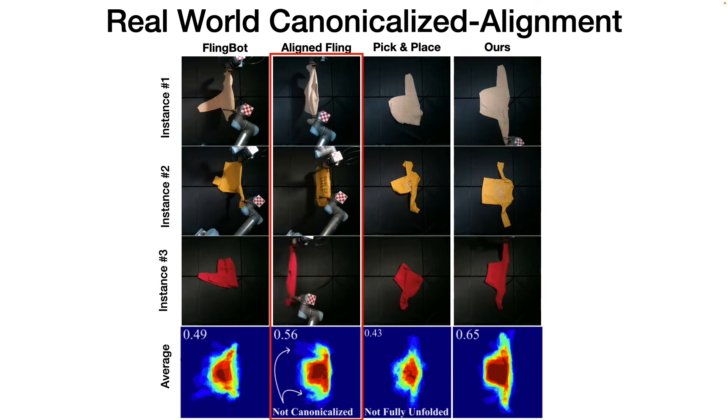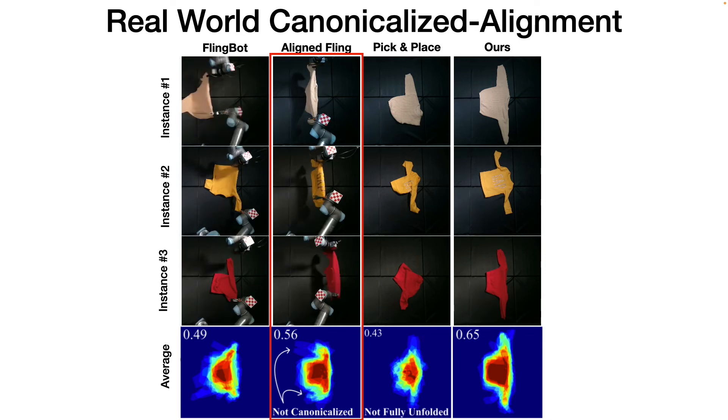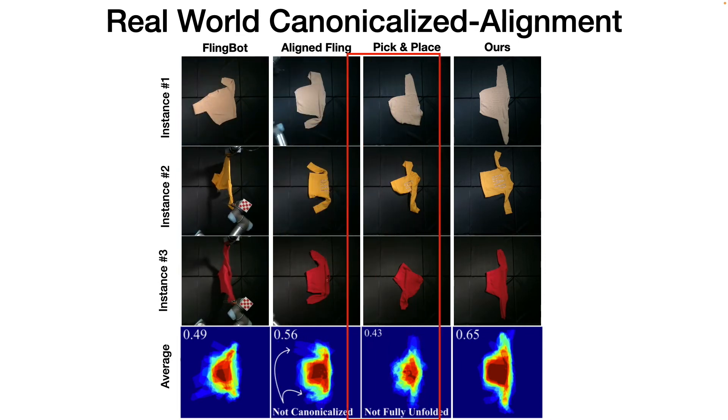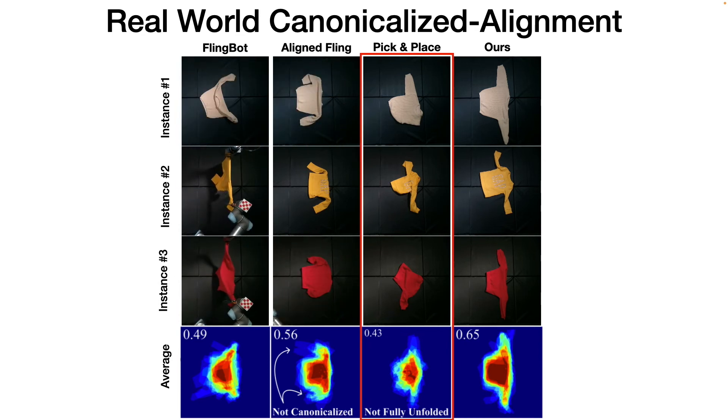In the second column, we have Aligned Fling, which can align and unfold the cloth well, but fails to canonicalize the arms. In the third column is Aligned Pick and Place, which cannot even unfold the cloth.